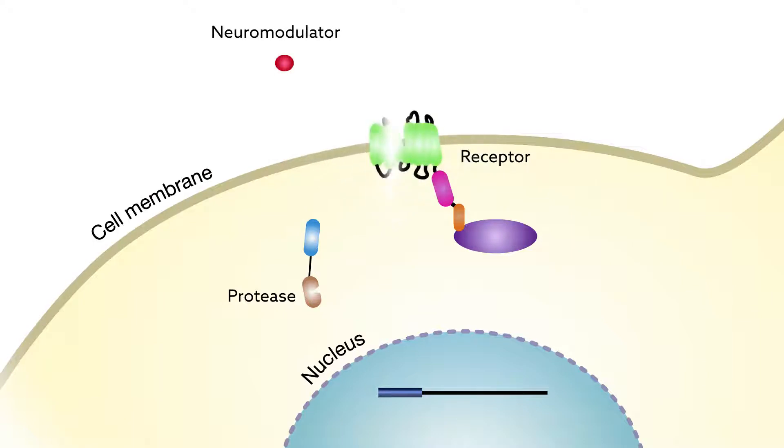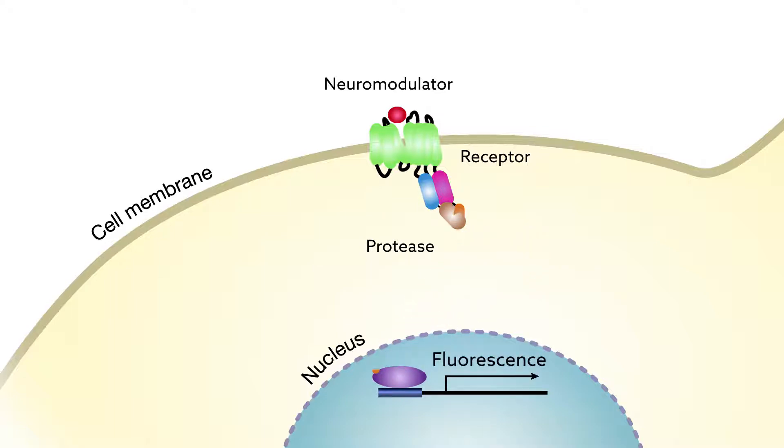Researchers have typically relied on sensors that change gene expression to watch neuromodulators at work. When a neuromodulator binds to a receptor fitted with this type of sensor, it drives the expression of a fluorescent protein. This tiny beacon thus labels cells influenced by the neuromodulator.